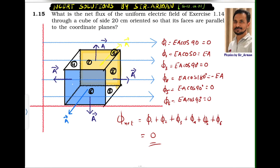Question number 1.15: what is the net flux of the uniform electric field of exercise 1.14 through a cube of side 20 centimeter, oriented so that its faces are parallel to the coordinate planes. So the square from the previous question is converted into a cube whose side length is 20 centimeter.